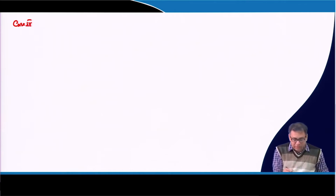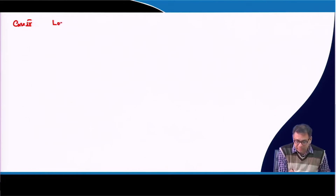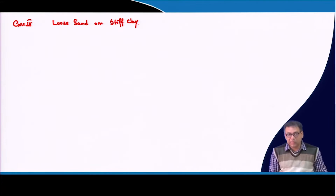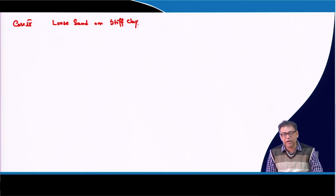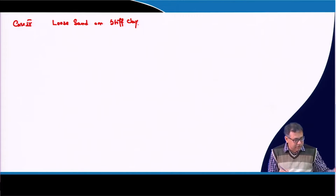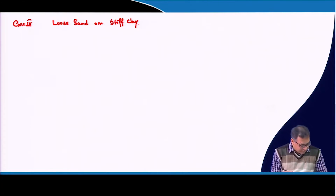For Case 4 of the layered soil, we have loose sand on stiff clay. Here the top layer is the weaker layer and the bottom layer is the stronger layer, which is the opposite of the previous three cases where the top was stronger. For this case, I will give expressions for three different footing conditions: the stiff footing, rectangular footing, and circular footing. From the rectangular footing equation you can also get the square footing equation.